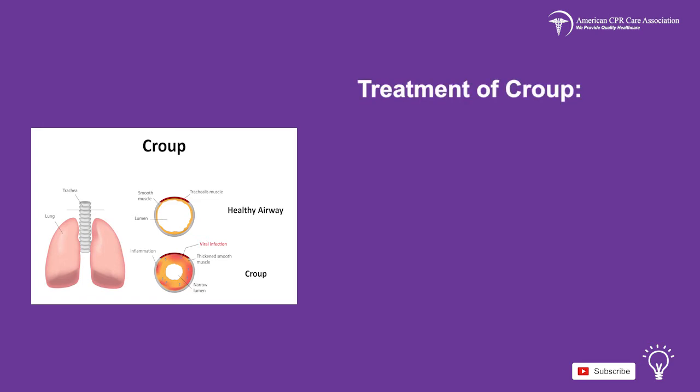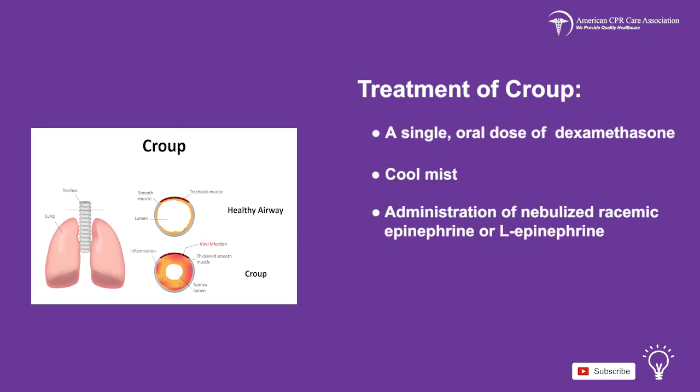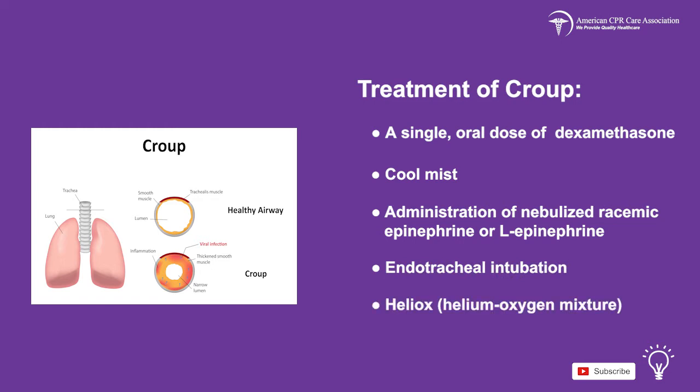Treatment of croup can vary due to the severity of the disease and is often treated with home care. Management ranges to include a single oral dose of dexamethasone, cool mist, administration of nebulized racemic epinephrine or L-epinephrine, endotracheal intubation, and heliox — a helium-oxygen mixture.